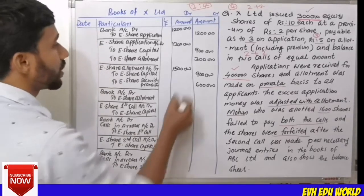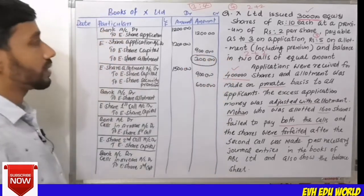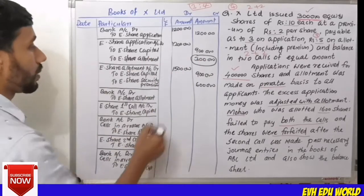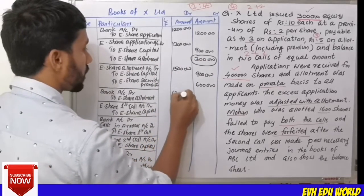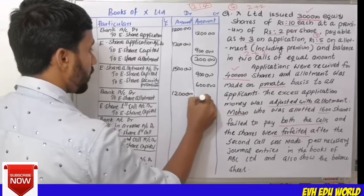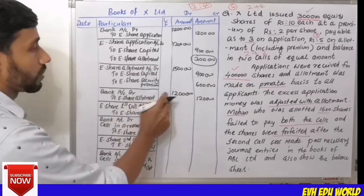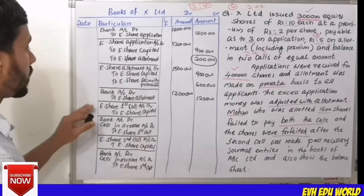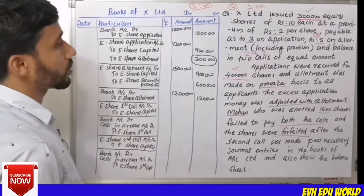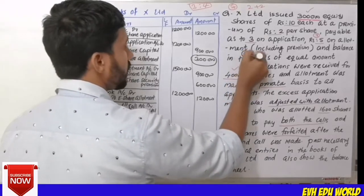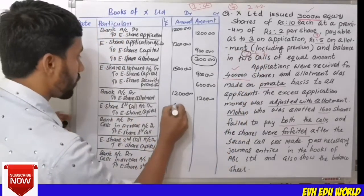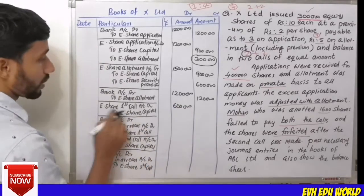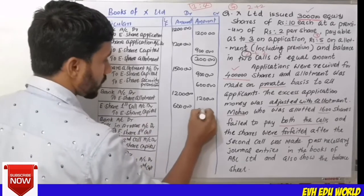Then, if you have excess application money, you adjust it with allotment. It is necessary to give the equity share allotment account, which is Rs.12,000. Next, equity share first call money due — first call is Rs.2,000. How do you calculate Rs.6,000 for the call?